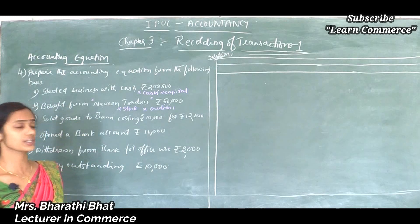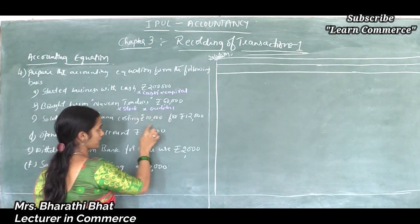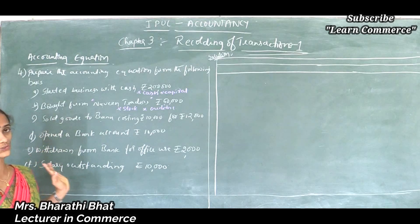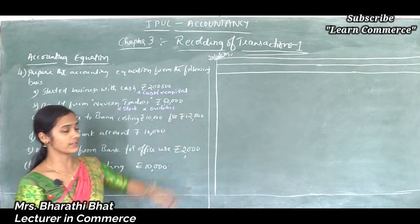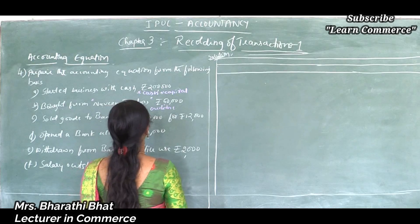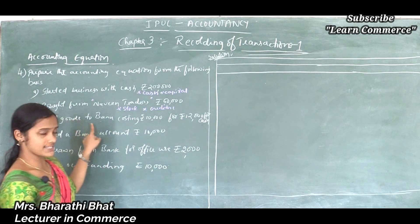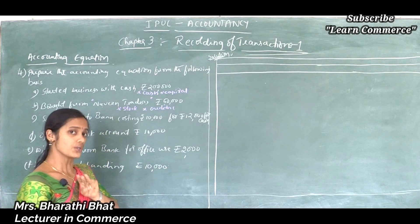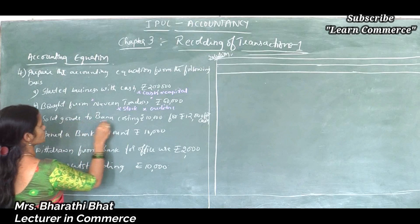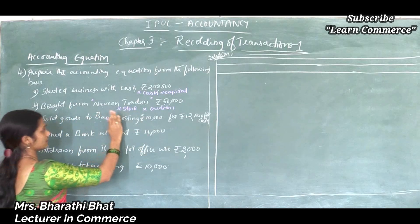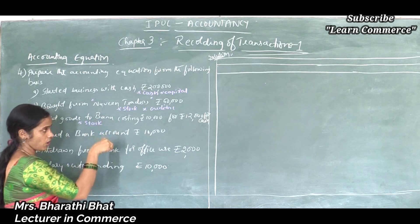Sold goods to Banu costing rupees 10,000 for rupees 12,000 for cash. Here this transaction affects three accounts. Most transactions are affected to two accounts, but sometimes a transaction affects more than two. Here sold goods to Banu costing rupees 10,000 — up to here it affects stock, meaning a decrease in stock.